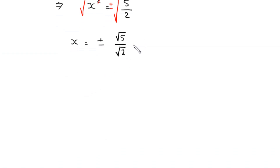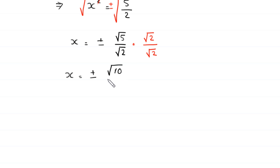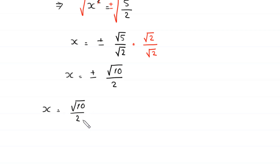To rationalize the denominator, we multiply and divide by root 2. So x equals plus or minus root 5 times root 2 over root 2 times root 2, which gives x equals plus or minus root 10 over 2. This means we get two values: x equals root 10 over 2 and x equals negative root 10 over 2.